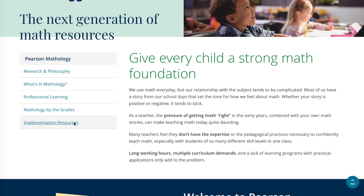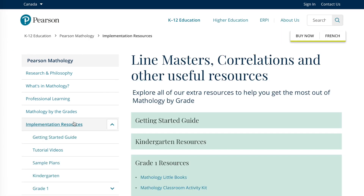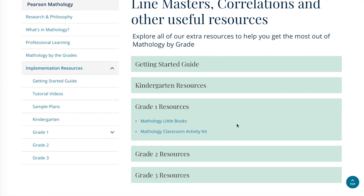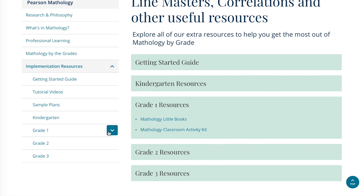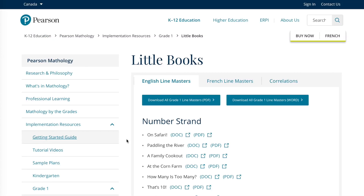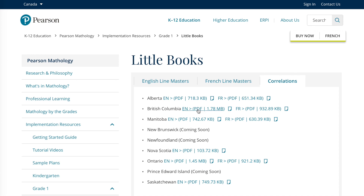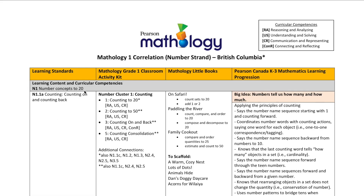Finally, the comprehensive correlations can be accessed through either Mathology Little Books or Mathology Classroom Activity Kit resources. Select an option, then select your province's correlation. General and specific outcomes and expectations are correlated to the Activity Cards, to the Math Little Books, and to the learning progression to enable planning.